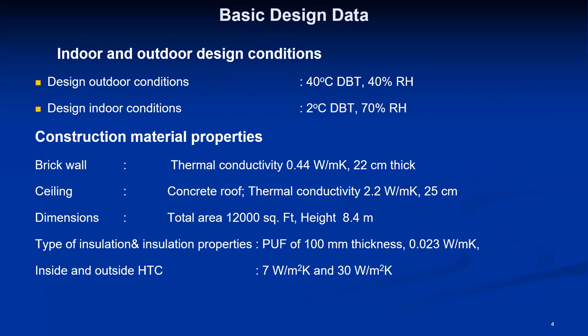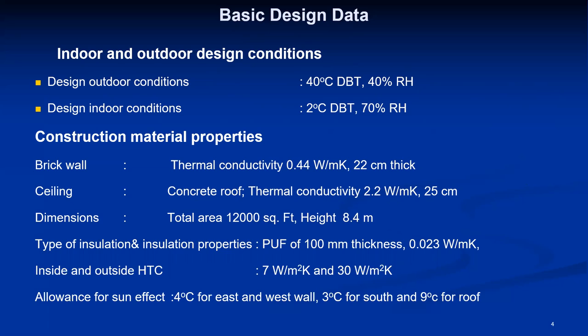The insulation recommended is 100 mm thickness with thermal conductivity 0.023 Watt per meter Kelvin. Inside heat transfer coefficient is 7 Watt per meter square Kelvin, while the outside heat transfer coefficient is 30 Watt per meter square Kelvin, slightly higher to account for windy conditions. The allowances for sun effects are: 4 degrees Celsius for east and west walls, 3 degrees Celsius for south, 0 degrees Celsius for north, and 9 degrees Celsius for the roof. Maximum solar transmission happens through the roof, followed by east, west, and south. No heat transmission takes place from the north side.